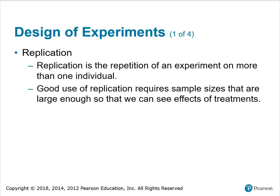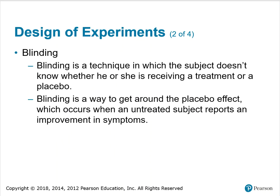To design an experiment, you must consider the following. Replication is the repetition of an experiment on more than one individual. Good use of replication requires sample sizes that are large enough so that we can see effects of treatments. Blinding is a technique in which the subject doesn't know whether he or she is receiving a treatment or a placebo. Blinding is a way to get around a placebo effect, which occurs when an untreated subject reports an improvement in symptoms.